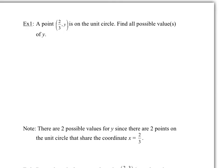In the first example, we have a point two-thirds, y on the unit circle. I want to find all the possible values of y. Let's diagram this — we have a unit circle, and if x is two-thirds, that falls a little bit more than halfway. There are two points on the unit circle where this could happen, so the y value could be either one of those two y values.